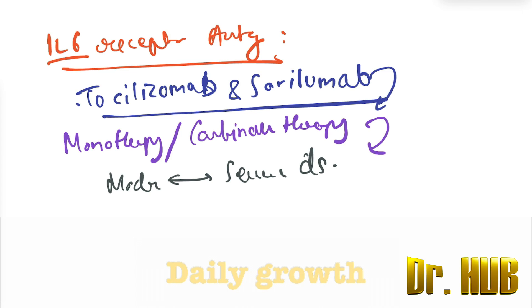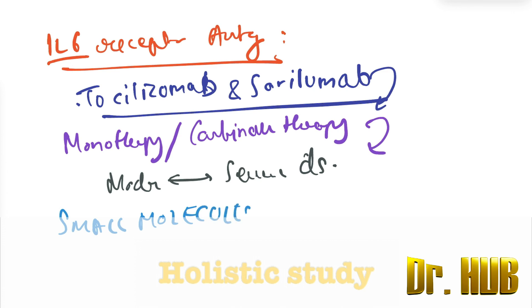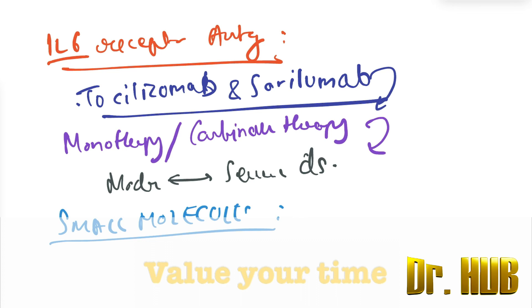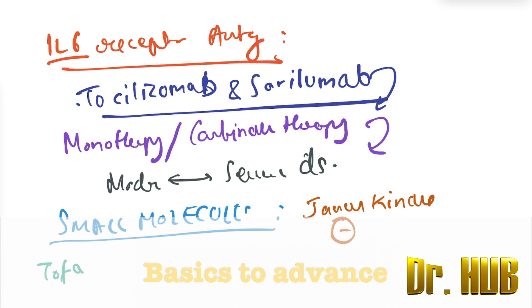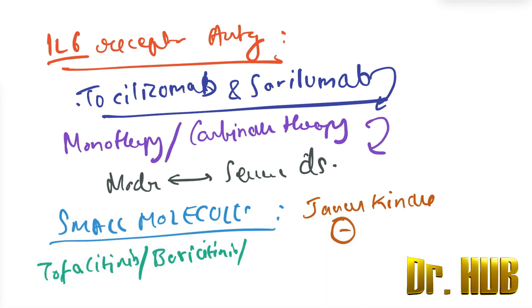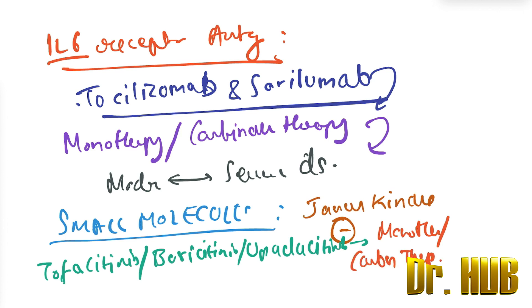Under the small molecule category, we have the Janus kinase (JAK) inhibitors. Examples include tofacitinib, baricitinib, and upadacitinib — all ending in '-citinib'. They are used as monotherapy or combination therapy.